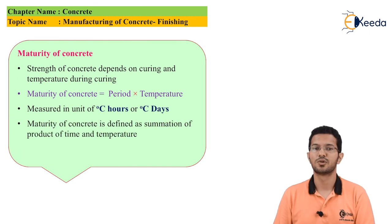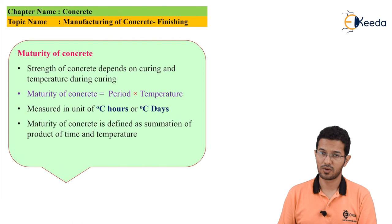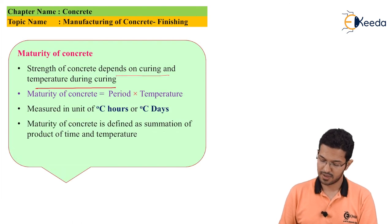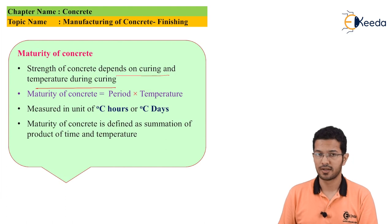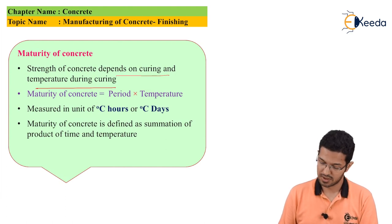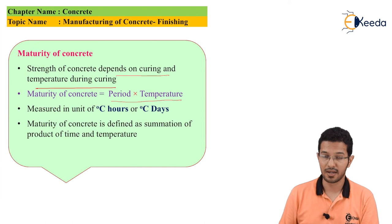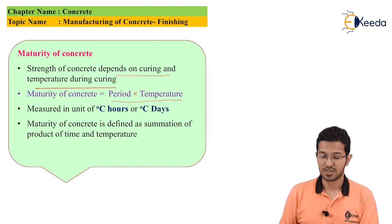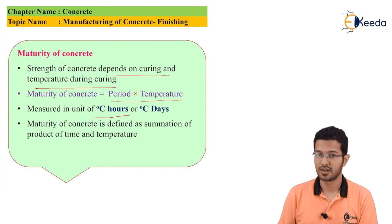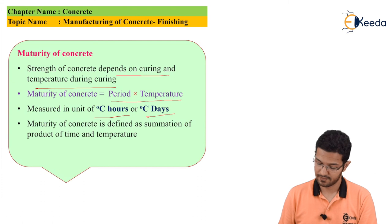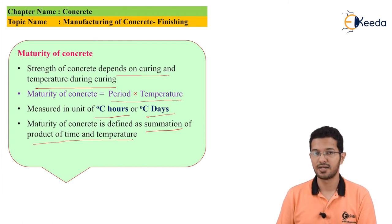Now let's look into the maturity of concrete. The strength of concrete always depends on curing and the temperature during curing. The maturity of concrete is given by a formula which is the period multiplied by the temperature, always measured in degree Celsius hours or degree Celsius days. The maturity of concrete is also defined as the summation of the product of time and temperature.